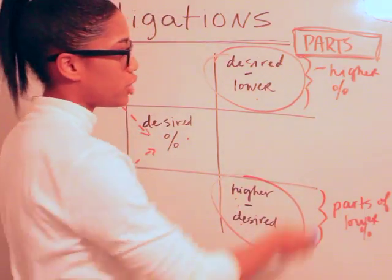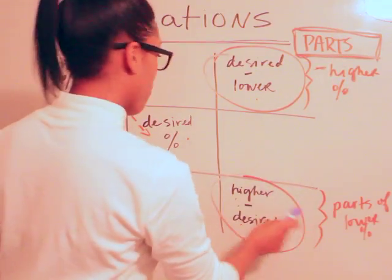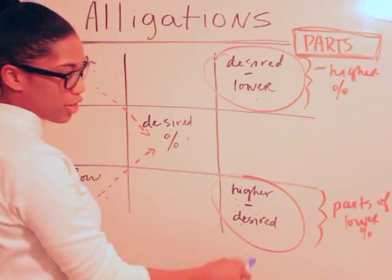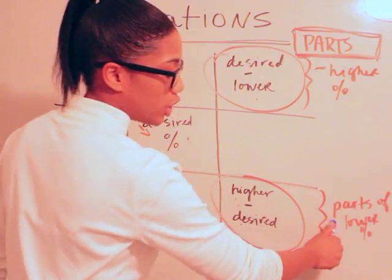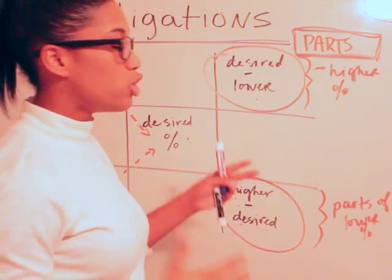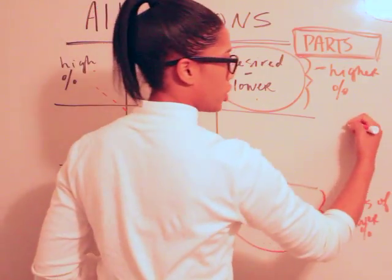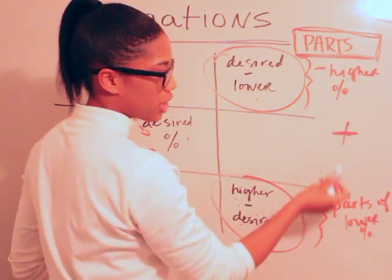From this track going down with the higher minus desired, you'll end up with the parts of the lower, the number of parts of the lower concentration that you need. And you'll put these two together and that will give you, so once you add the parts of the higher percentage and the parts of the lower percentage, that's going to end you up with your total parts.